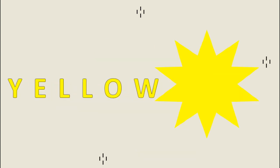Now we go to number four. Number four, warnanya adalah warna kuning. So kuning in English is yellow. Sekarang kita eja ya: Y, E, L, L, O, W. Yellow. Jadi warna kuning adalah yellow.